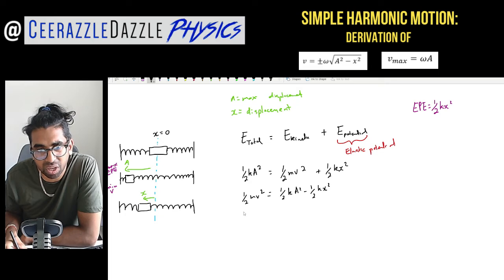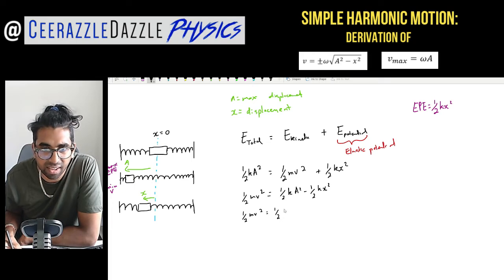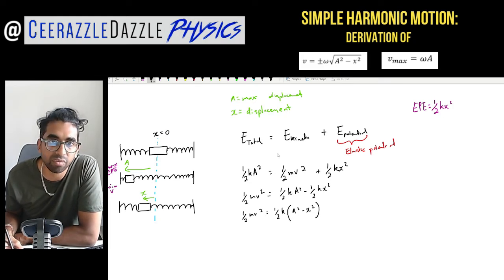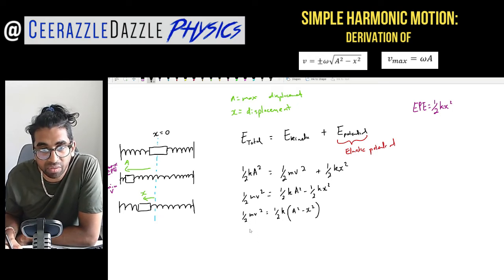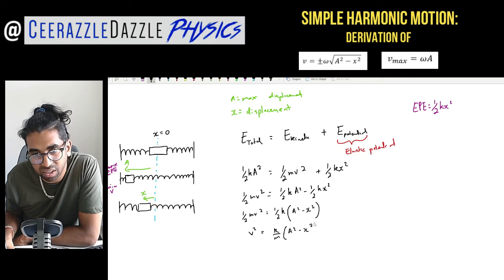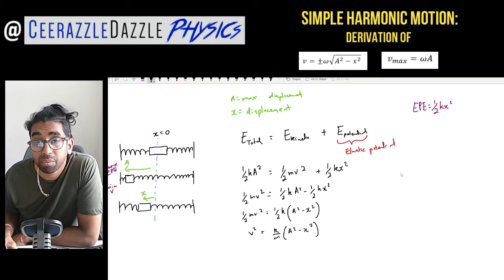Factoring out the half and k on the right-hand side: one-half m v squared equals one-half k times open bracket A squared minus x squared. The halves cancel from both sides, giving us v squared equals k over m, times open bracket A squared minus x squared. Remember: A is maximum displacement, x is displacement at any point.